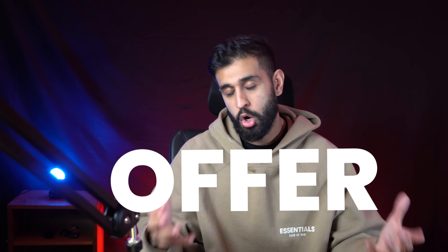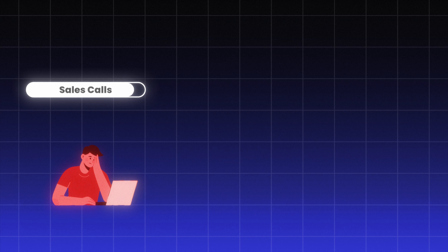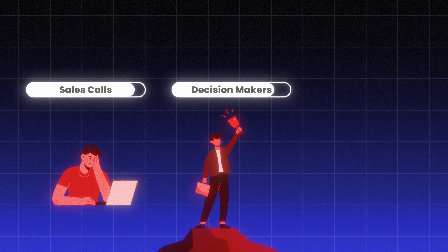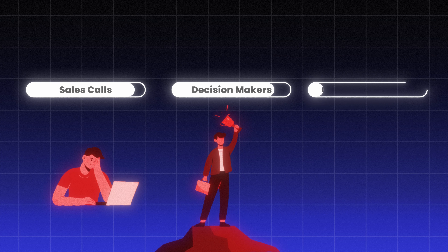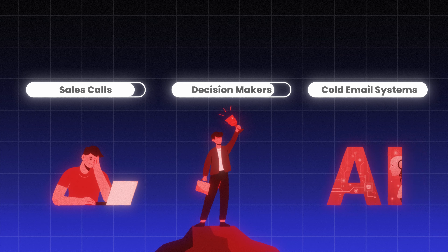The next thing we need to talk about is the offer — how am I actually going to get these 3PL companies to want to book meetings with me? Our pain point would be struggling to generate more sales calls, and the result would be consistently meeting with more decision makers at e-commerce brands. Our unique mechanism would be AI automated cold email systems.